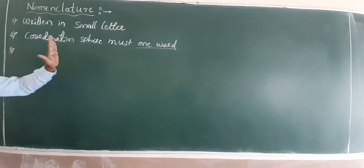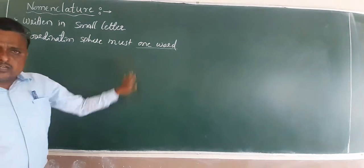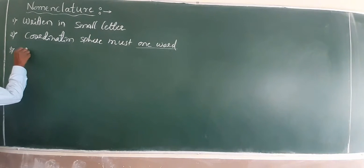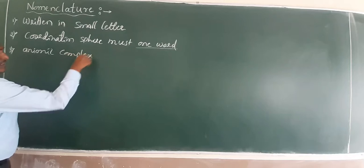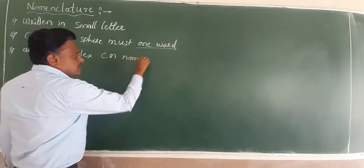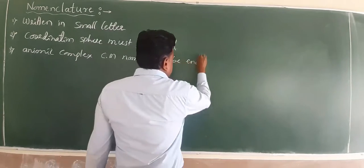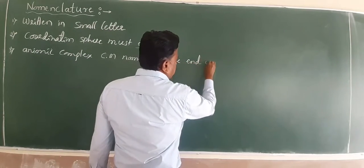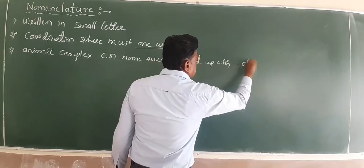Next, find out the type of complex. There are three types of complex: cationic, anionic, and neutral. If the complex is anionic, the central metal name must end with the suffix -ate.